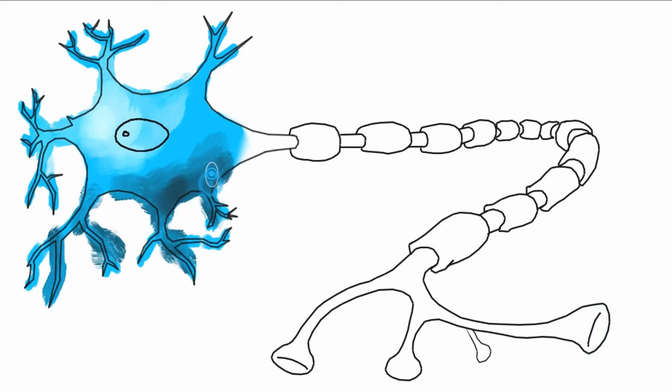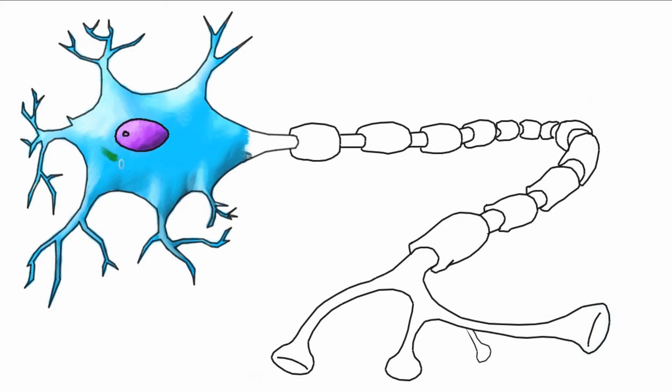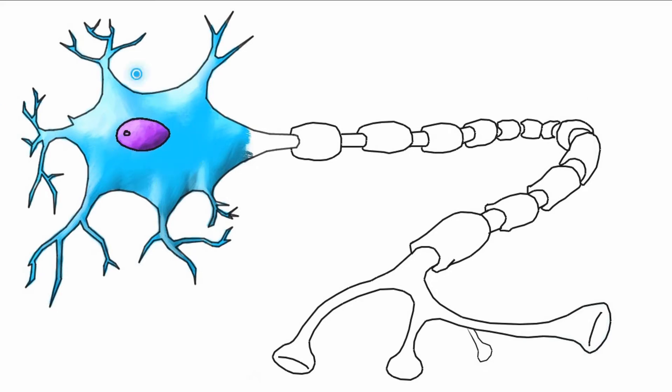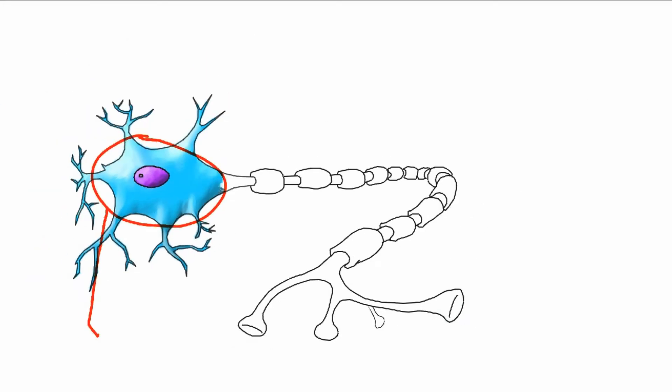To get an idea of how this works, we'll start with this big cell body of the neuron called the soma. The soma is the metabolic center of the cell. It makes proteins, contains the DNA of the nucleus, but we don't need to worry about all that right now. What is important to know is the name.